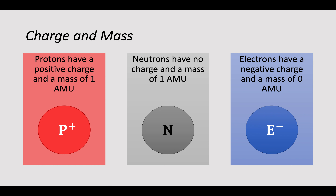Let's talk about charge and mass. Protons have a positive charge and a mass of 1 AMU — atomic mass unit. Neutrons have no charge at all and also have a mass of 1 AMU. They're both found in the nucleus and are very similar in size and mass. Electrons have a negative charge and a mass of 0 AMU. They move very quickly, are much smaller than protons and neutrons, and are in orbit — not found within the nucleus.